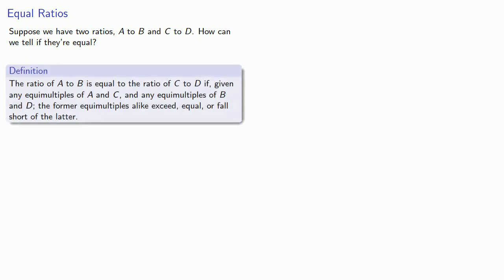So here it goes. The ratio of A to B is equal to the ratio of C to D if, given any equal multiples of A and C, and any equal multiples of B and D, the former equal multiples alike exceed, equal, or fall short of the latter. As I warned you, that's quite a mouthful, but it's actually not so bad if we take it one step at a time.